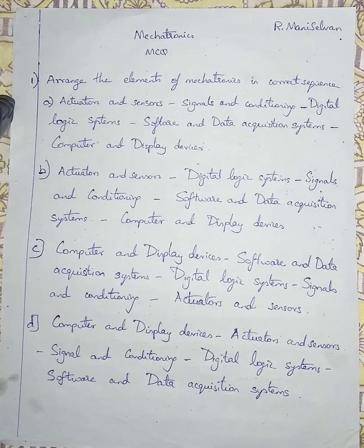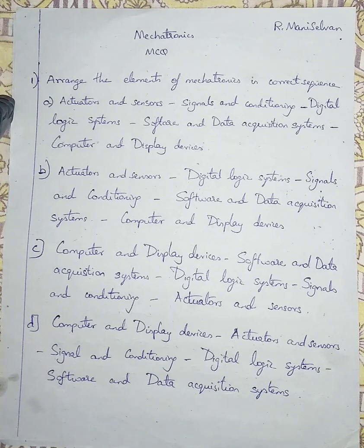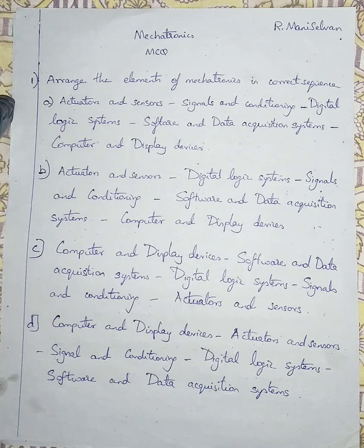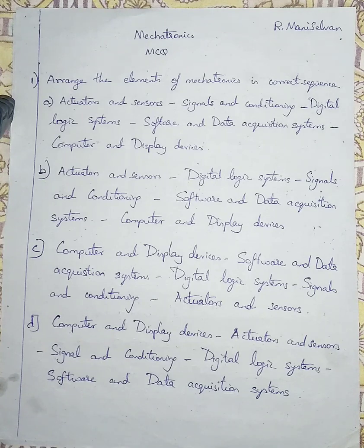The devices which control the overall systems in mechatronics are called the digital logic system. Digital logic systems consist of various devices like microcontrollers and digital logic circuits. Then it is followed by software and data acquisition systems. The software and data acquisition system collects the information, collects the input and output from the actuators and sensors, and signal conditioning in a suitable form, converts it, and displays it on computer and display devices.